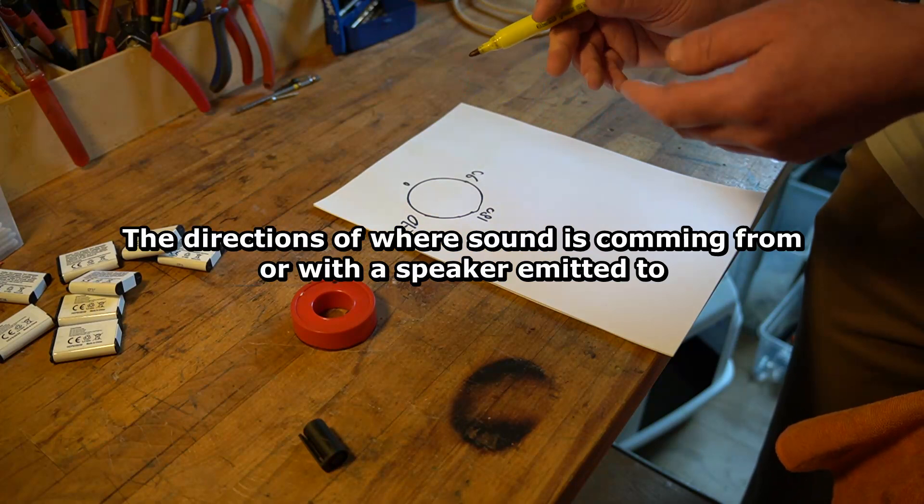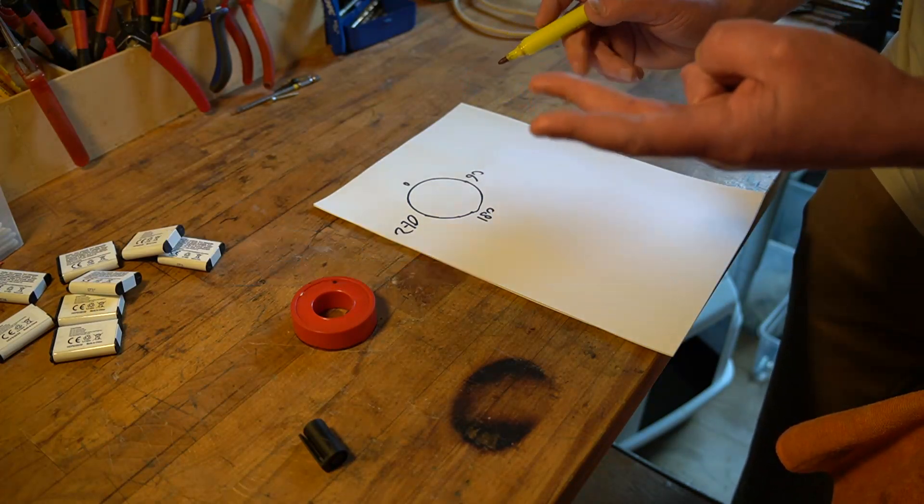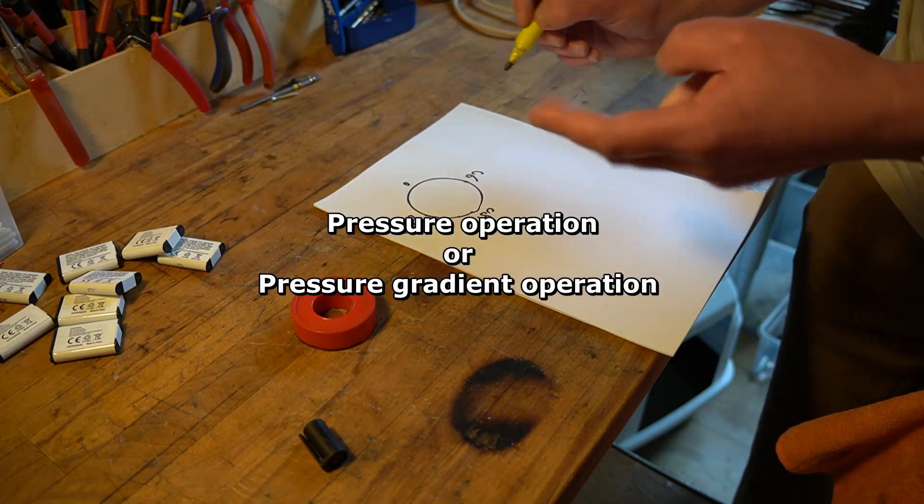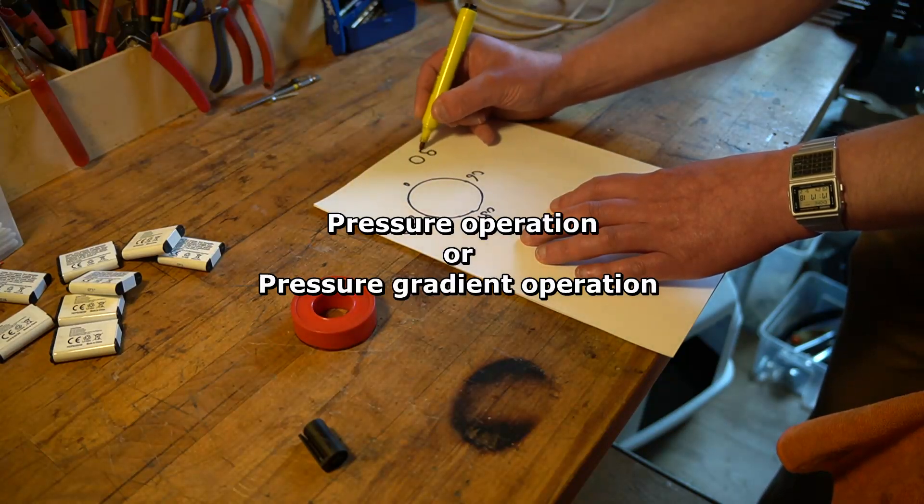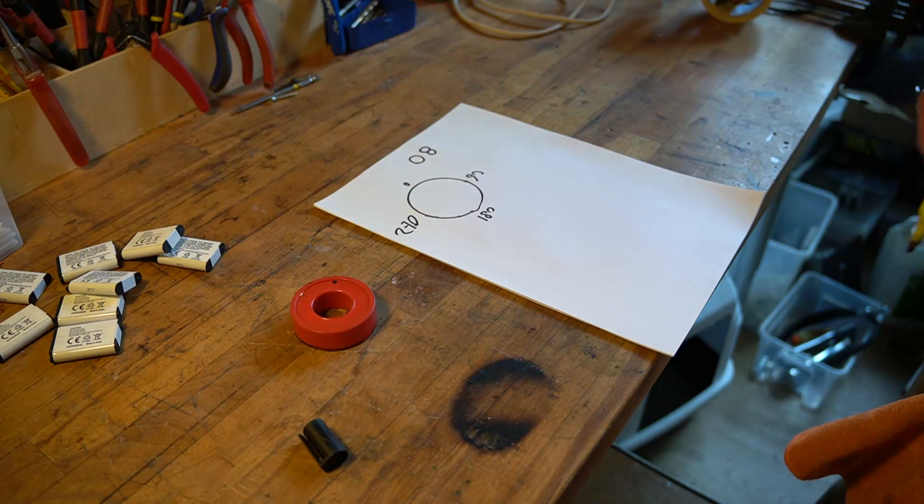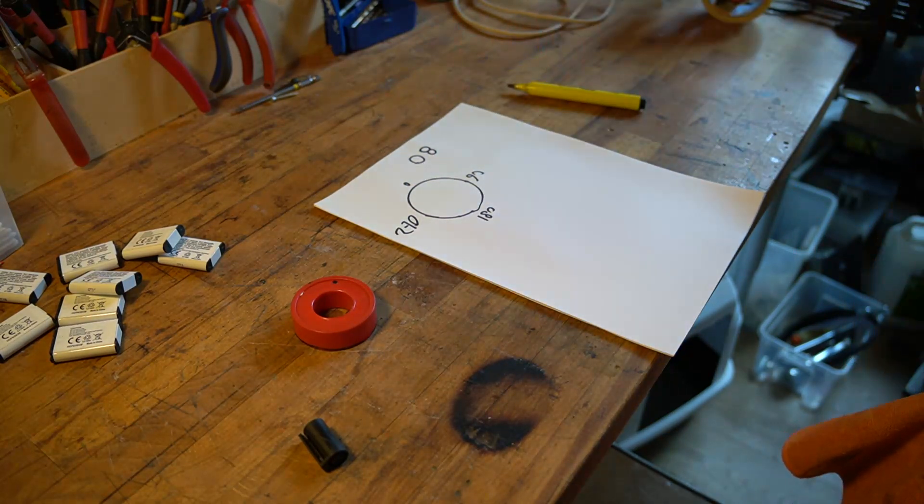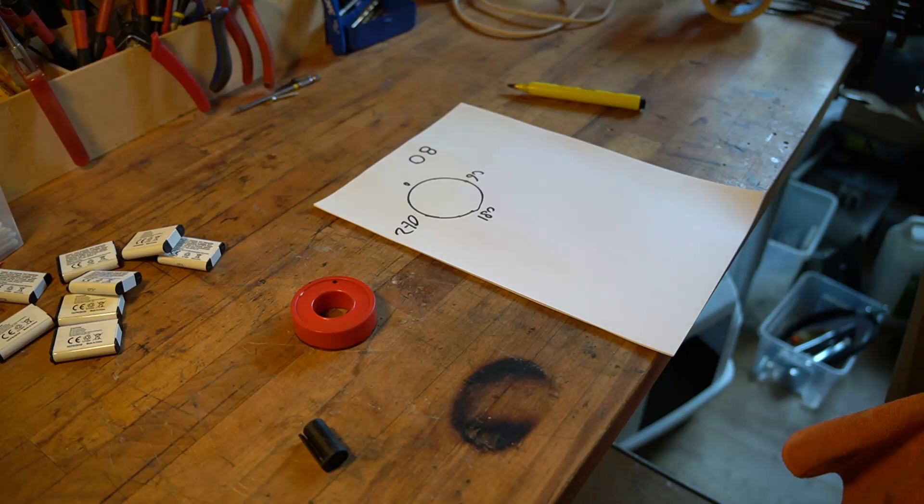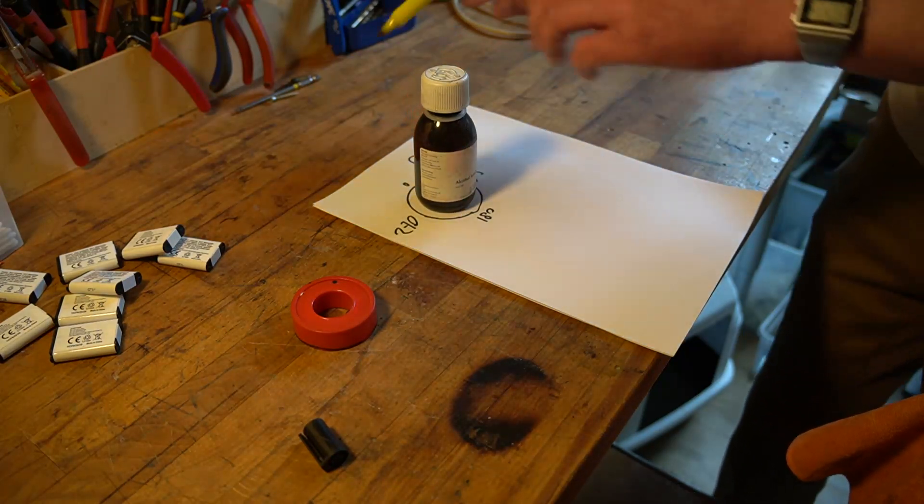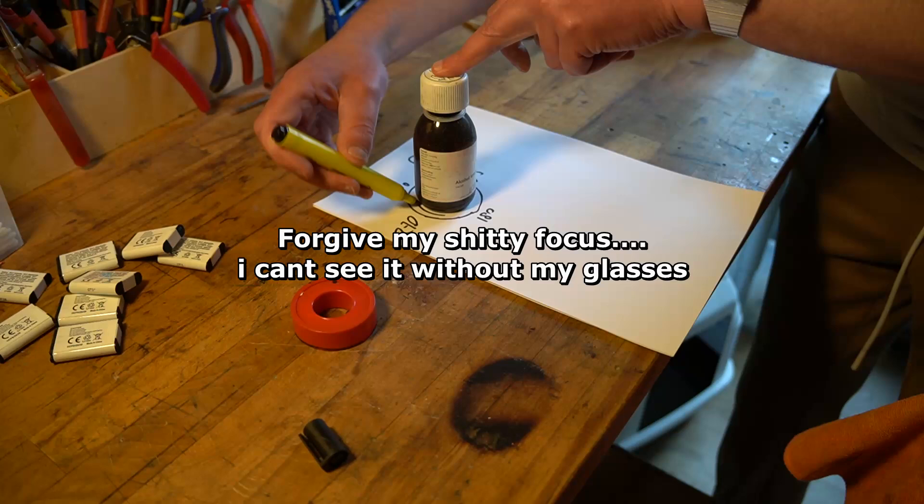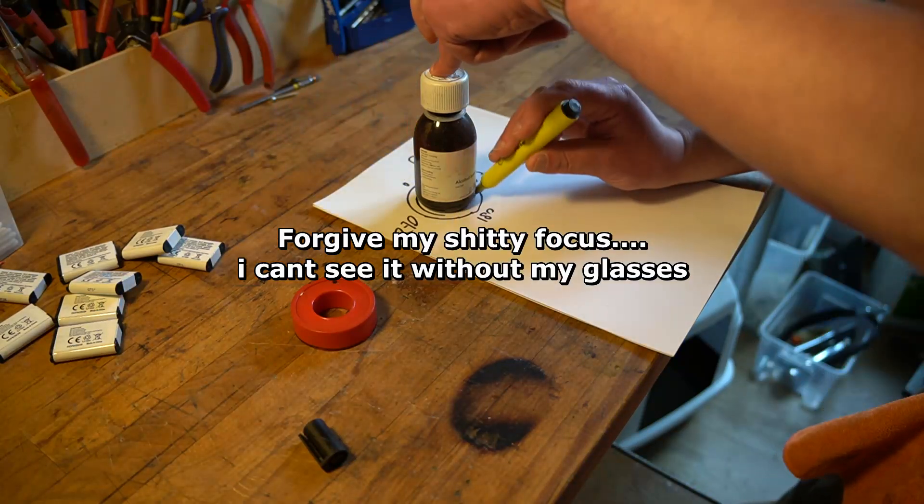Now, we have only two basic ones, which is omni and figure of eight. Omni is a circle, and a figure of eight is like two circles, or an eight. Who would have guessed? I could have prepared this, but I didn't. So there you go. We draw an omni, and it's no surprise, it's a circle.